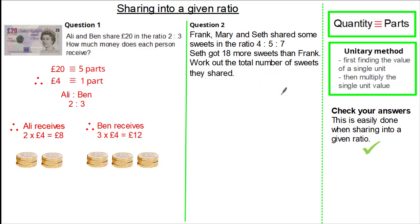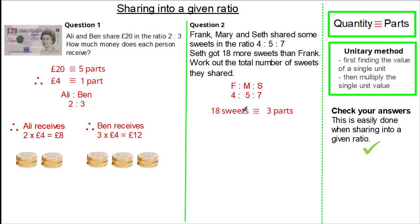Firstly, we write out the ratio so we know which person is represented by which parts: Frank to Mary to Seth in the ratio 4 to 5 to 7. Given that Seth gets 18 more sweets than Frank, we need to identify the equivalent parts. The difference in parts between Frank and Seth is 7 subtract 4, which equals 3. So we know 18 sweets is 3 parts.